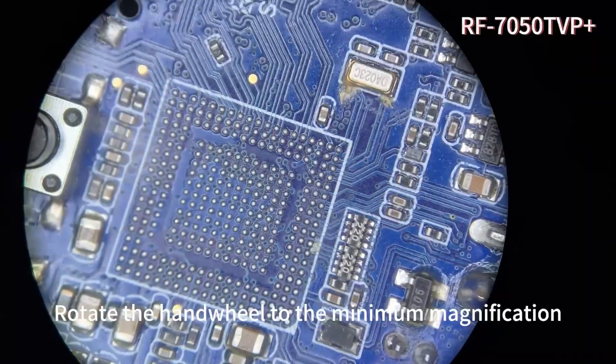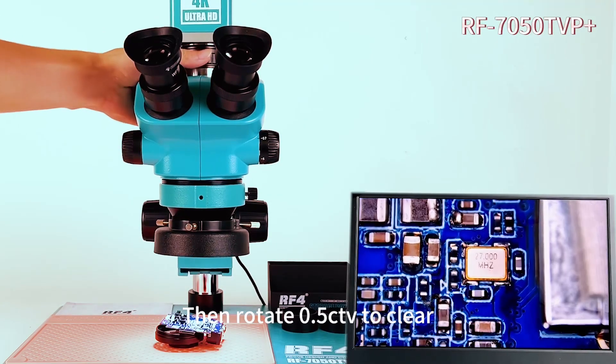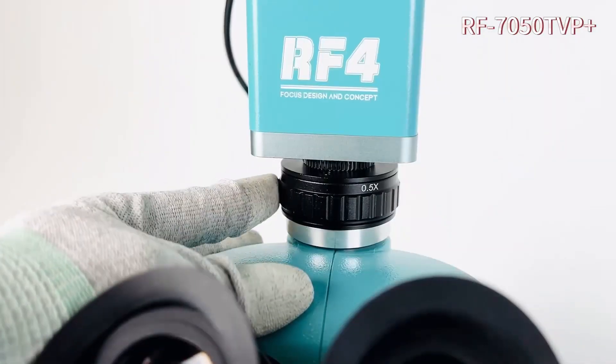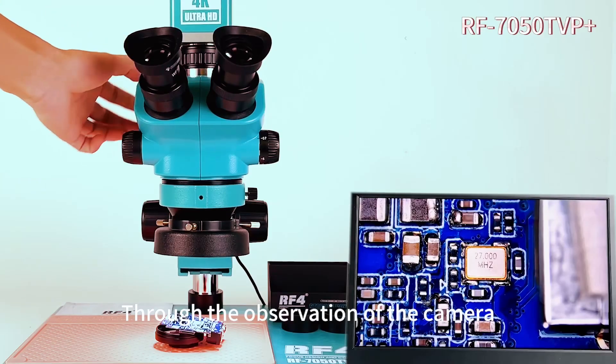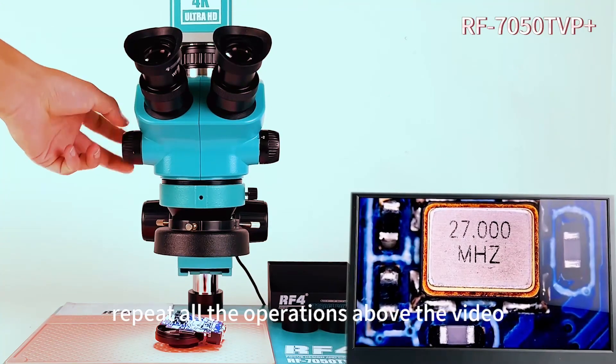Rotate the handwheel to the minimum magnification. Then rotate 0.5 CTV to clear. Rotate the handwheel to the maximum magnification. Through the observation of the camera, if the video is not clear, repeat all the operations above.